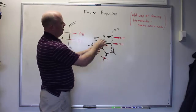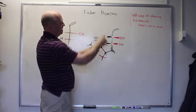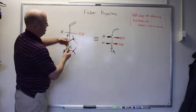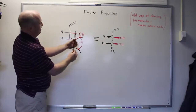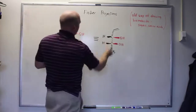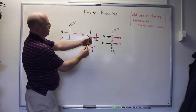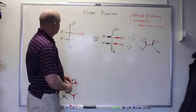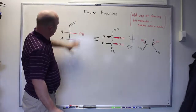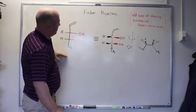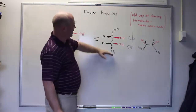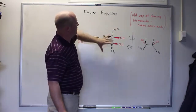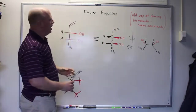So what we need to do in order to translate a Fischer projection into the line-angle format is first redraw it and then rotate it and figure out what it looks like. First we take this two-dimensional representation and try to convert it into a three-dimensional representation where the horizontal lines are coming toward us and the vertical lines are going back away.